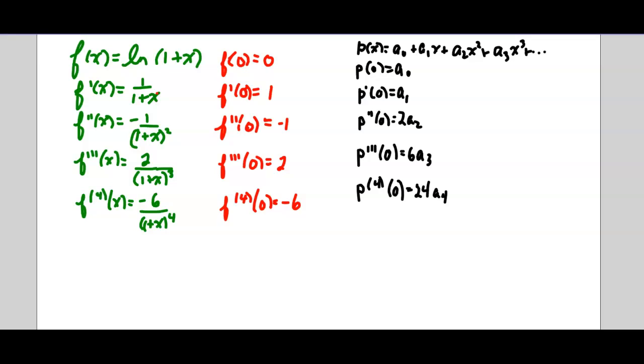Basically substitute 0 in for x for each of those and then remember you're approximating with a polynomial function. So p(x) equals a_0 plus a_1 x plus a_2 x² etc. So then you take the derivative of that. That's always going to be the same if you're approximating with a polynomial function.